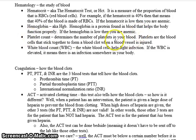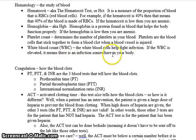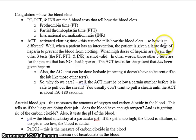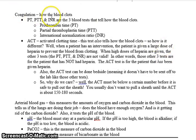The platelet count determines the number of platelets in your blood. Platelets are the blood cells that stick together to form a blood clot when a blood vessel is injured. The white blood count, WBC — white blood cells help fight infection. If the white blood count is elevated, it means there is an infection somewhere in your body.